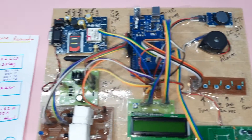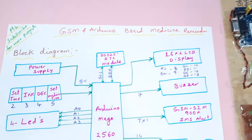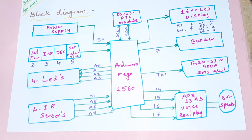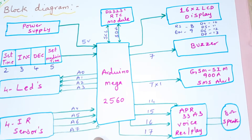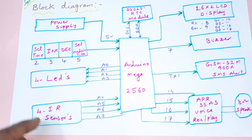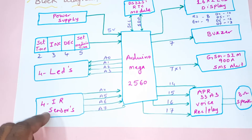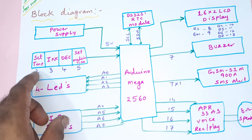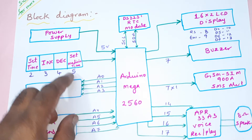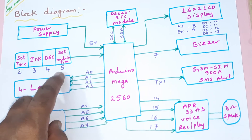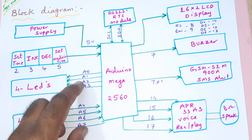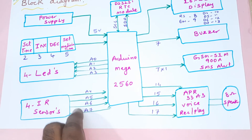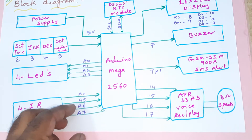Hi, we are from SVSM. The project title is GSM and Arduino-based smart medicine reminder. In this project we are using an Arduino Mega 2560 board. There are four IR sensors, four IR LEDs, and four switch buttons: set time, increment, decrement, set medicine time. These are connected with pins 2, 3, 4, 5 and A0, A1, A2, A3. Four LED indicators and four IR sensors are used for medicine taken or not representation, connected to A4, A5, A6, A7.